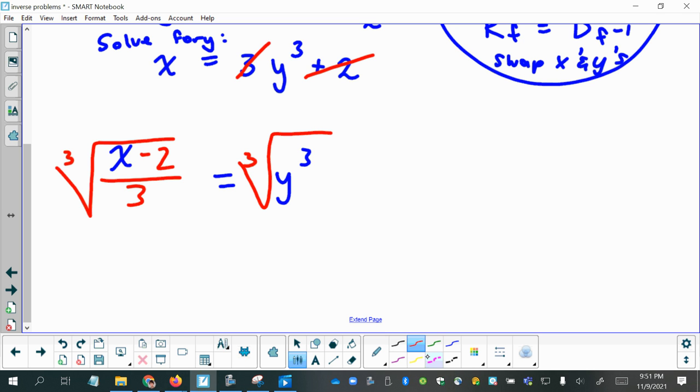So now, I can rewrite this as, let's use a different color, y equals the cube root of x minus 2 over 3.